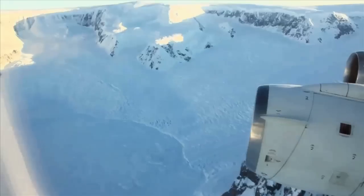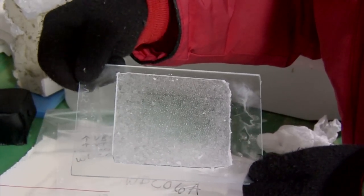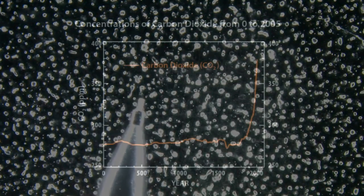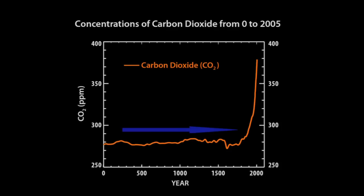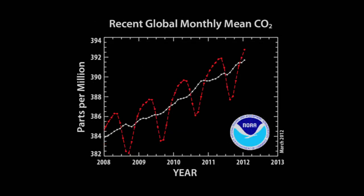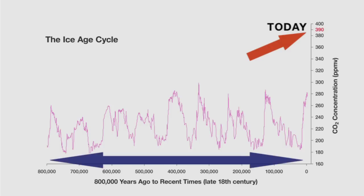To determine how CO2 concentration varied prior to modern measurements, scientists have studied the composition of air bubbles trapped in ice cores extracted from Greenland and Antarctica. These data show that for at least 2,000 years before the Industrial Revolution, atmospheric CO2 concentration was steady, and then began to rise sharply beginning in the late 19th century. Today, atmospheric CO2 concentration exceeds 390 parts per million, around 40% higher than pre-industrial levels, and according to ice core data, higher than any point in the past 800,000 years.